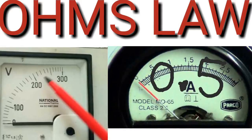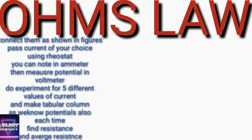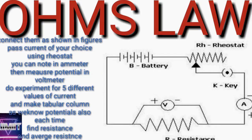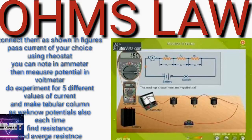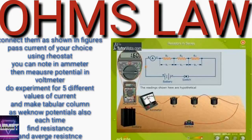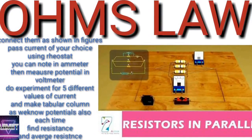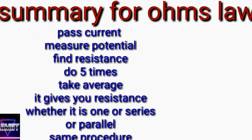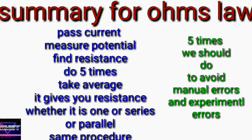I am showing in the diagrams how to find the individual resistance. The procedure is the same for all of them. First, pass the current. Using the rheostat, you can alter the current. For each current, find out the potential. After finding the potential, V divided by I gives you the individual resistance. Do the experiment four to five times to avoid experimental errors, and take the average of all the resistances. This same procedure applies for resistance in series and resistance in parallel.